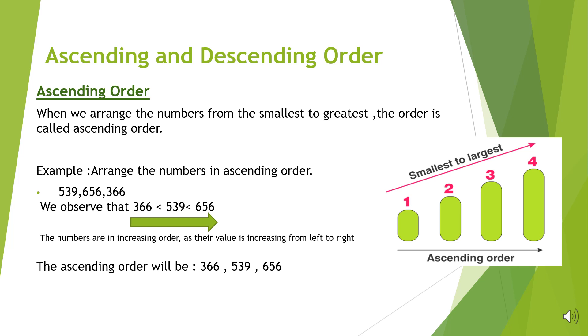Next is 5, so the next number in the order will be 539. The greatest is 6, so the last number will be 656. The ascending order will be 366, 539, 656. So, ascending order means arranging the numbers in increasing order.